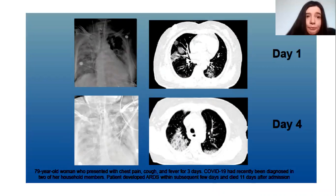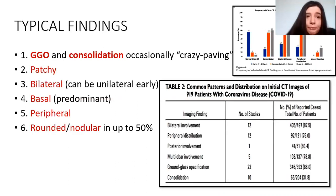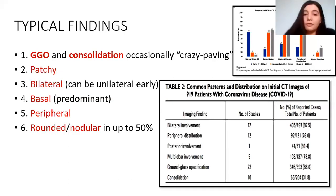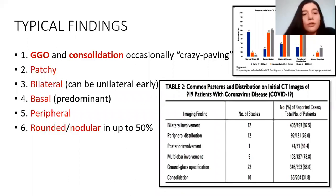Now we are going to discuss the typical findings on CT scan. First, ground glass opacities and consolidation, and occasionally the crazy paving pattern. It is patchy, not symmetrical. It is bilateral but could be unilateral early on — we can first have pneumonia unilaterally, then spreading as in ARDS. It is predominantly basal and peripheral, with rounded nodular opacities in up to 50% of cases.